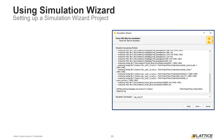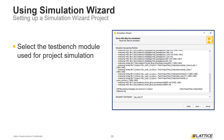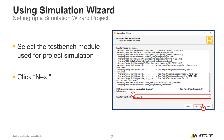The second to last page of the Simulation Wizard window, as seen in the figure on the screen, is where users can select the test bench module they created to simulate their project. The Simulation Top module is automatically inferred by Radiant; however, if users want to select a different test bench, they can do so using the Simulation Top module drop-down at the bottom of the page. After selecting the correct test bench module, users can proceed by clicking the Next button.